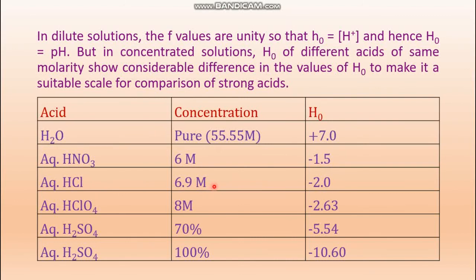For 8 molar perchloric acid — the strongest acid — minus log(8) = −0.9, but H₀ equals −2.63. This substantially higher magnitude illustrates how activity coefficients play a vital role in concentrated solutions.